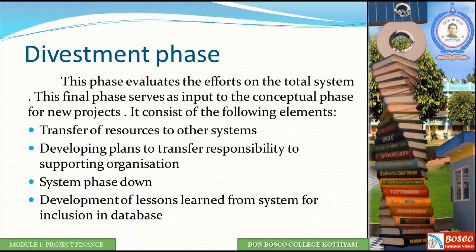The project life cycle is a continuous process. If we have a problem, we generate the idea, which is well defined and assessed for feasibility. We develop the production phase, implement the product and service in the operational phase, and finally complete the divestment phase — from which a new project cycle can begin again.